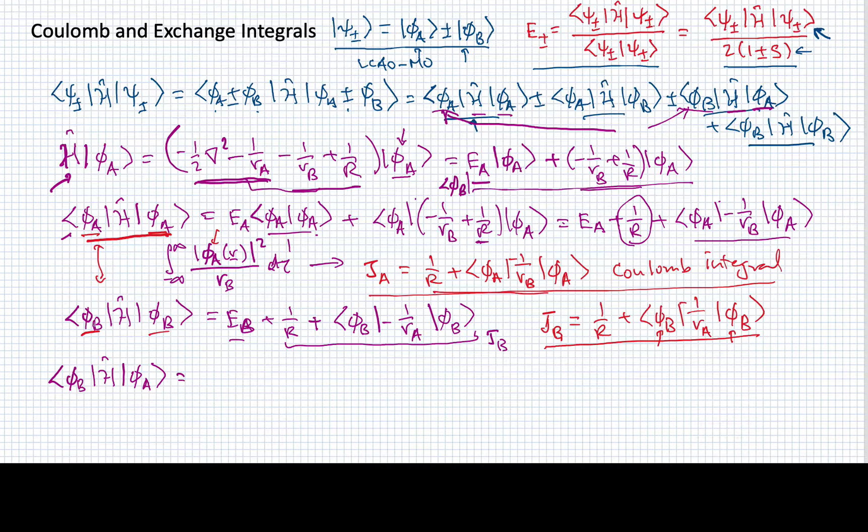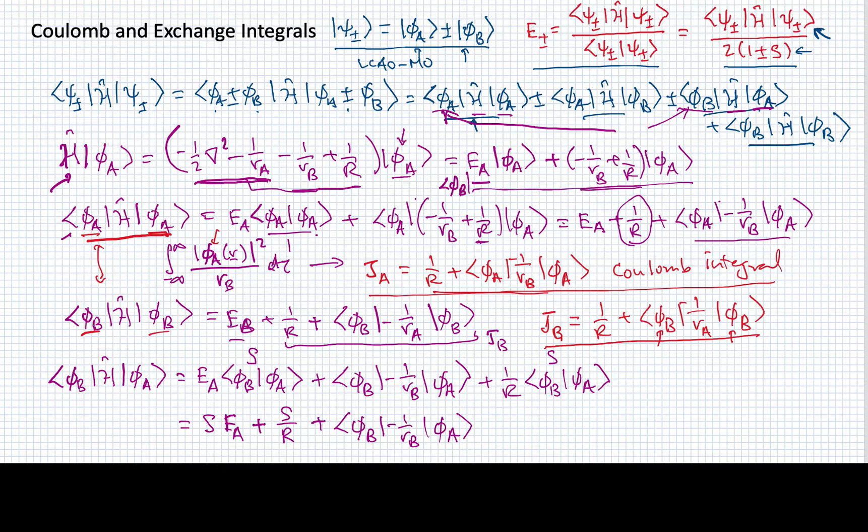This would give me E sub A times the inner product of phi B phi A, which should look familiar. This is just the overlap integral. Then I'll have phi B minus 1 over R B phi A, and I'll also have 1 over R phi B phi A, which of course is also the overlap integral. I'm going to end up with a result that looks like this. I'll have the overlap integral times the energy of E A plus the overlap integral over the internuclear distance R and another term here which I haven't defined as anything yet.